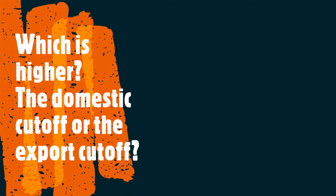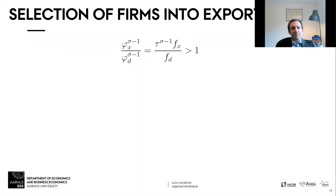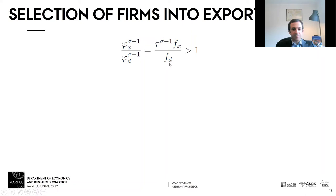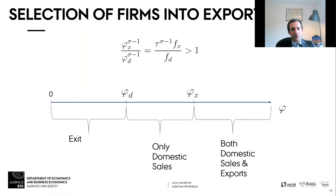Taking the ratio of the two cutoffs gives an expression that is a function of tau, f_x, and f_d. We assume this expression is greater than one. If we assume the fixed costs are the same, this boils down to saying the difference in the cutoffs is tau, and tau is greater than one. Even if we allow the fixed cost of exporting to be less than the domestic fixed cost, all we require is that tau to the sigma-minus-one times f_x is greater than f_d.